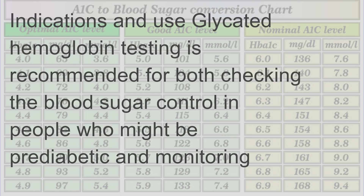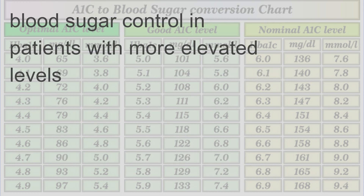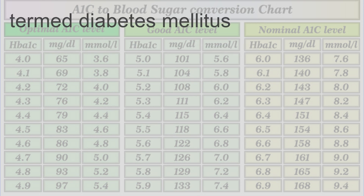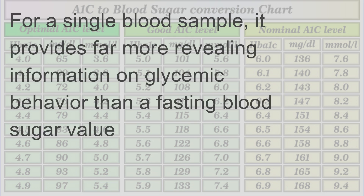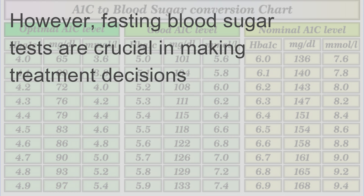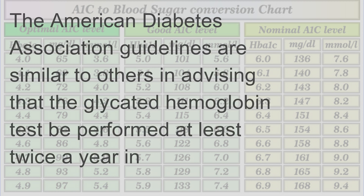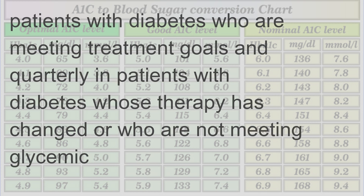Glycated hemoglobin testing is recommended for both checking blood sugar control in people who might be pre-diabetic and monitoring blood sugar control in patients with more elevated levels termed diabetes mellitus. For a single blood sample, it provides far more revealing information on glycemic behavior than a fasting blood sugar value. The American Diabetes Association guidelines advise that the glycated hemoglobin test be performed at least twice a year in patients with diabetes who are meeting treatment goals, and quarterly in patients whose therapy has changed or who are not meeting glycemic goals.